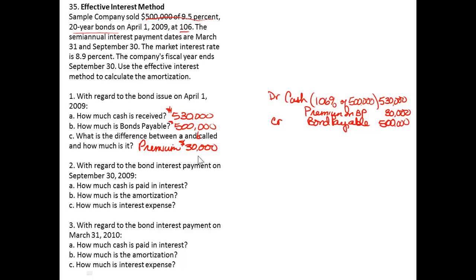So number two, when we make the first interest payment, we know we're going to debit interest expense for the carrying value, or also known as the book value, or also known as the present value when you begin, times the market or effective rate, which is 8.9%. And these are semi-annual bonds for half a year. So if I do the math, that's $23,585.